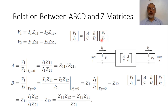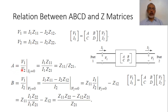The relation between V1, I1 and V2, I2 in terms of the ABCD matrix is [V1; I1] = [A B; C D] · [V2; I2]. From the definition of the transmission matrix, coefficient A equals V1 over V2 when I2 = 0. Setting I2 = 0 in the impedance matrix gives V1 = I1·Z11 and V2 = I1·Z21, so A = Z11/Z21.